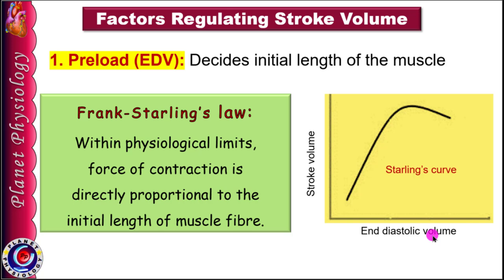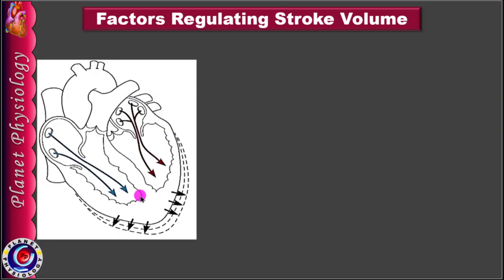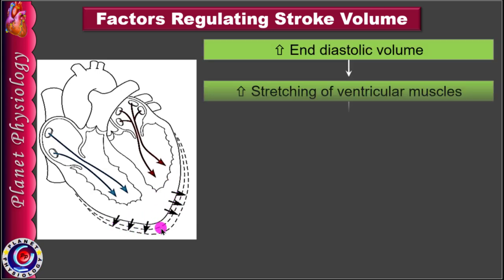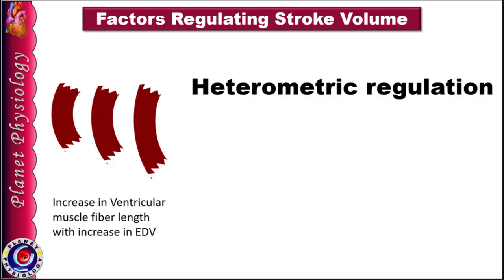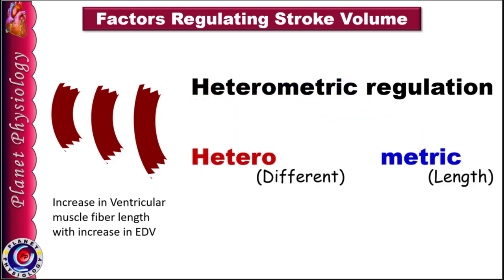As end-diastolic volume increases, ventricular muscles are stretched, leading to increase in initial length of the muscle fibres. This increases myocardial contractility and hence the force of contraction, leading to increase in stroke volume and cardiac output. Since contractility changes due to changes in the initial length of the ventricular muscle fibres, this type of regulation is also called heterometric regulation, where 'hetero' means different and 'metric' refers to length.